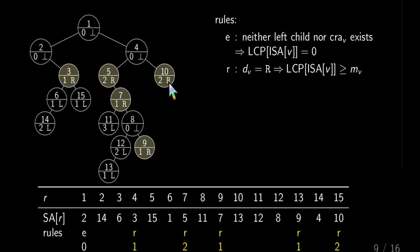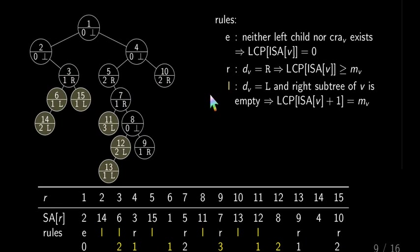The next rule is R for right. So whenever we have a flag R, this means that our LCP value is lower bounded by our stored LCE value. That's because R means that we have compared us with cray, and cray is always lexicographically smaller. So it's justified to have this lower bound. The next is L. So the flag is L, but with the additional requirement that the right subtree of V is empty.